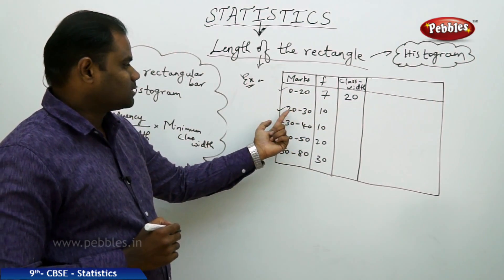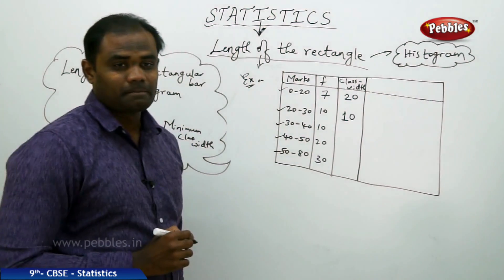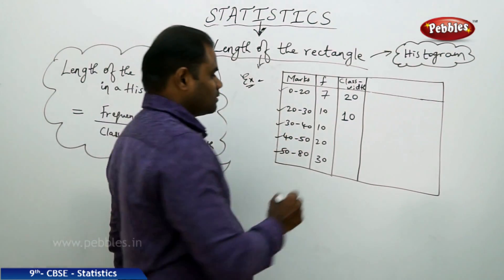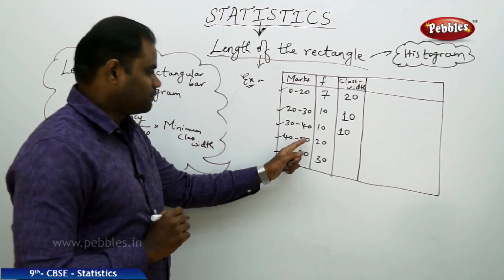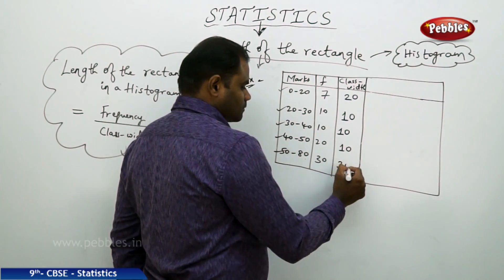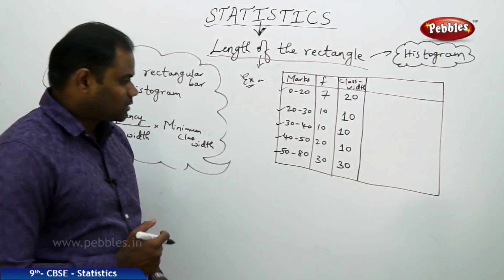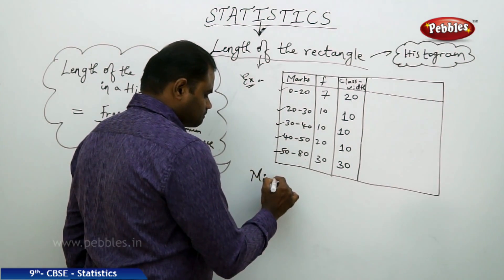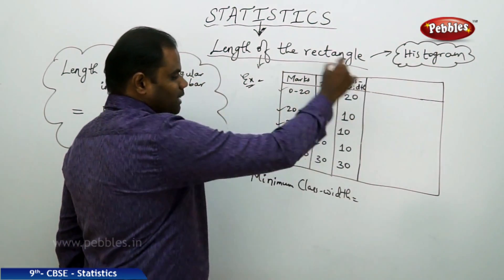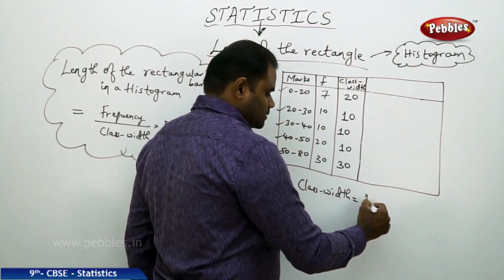For the next interval, the upper limit is 30 and the lower limit is 20, so 30 minus 20 gives a class width of 10. Similarly, 50 minus 40 is 10, and 80 minus 50 is 30 — that is how we get the class width of each class interval. The minimum class width is the least of all these values, and clearly 10 is the minimum class width.